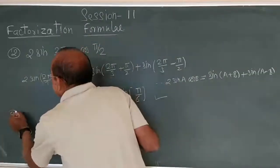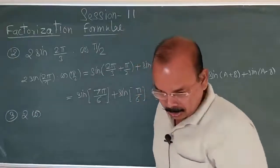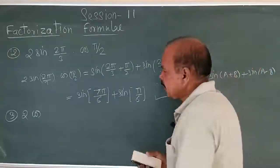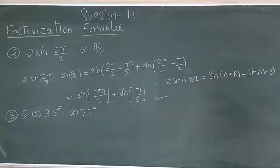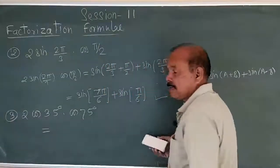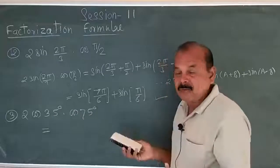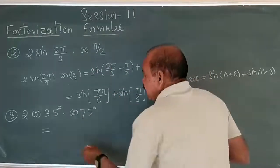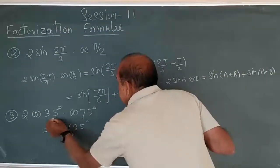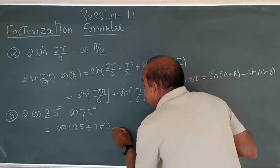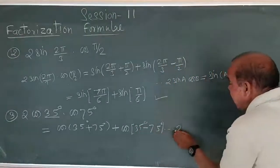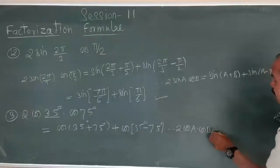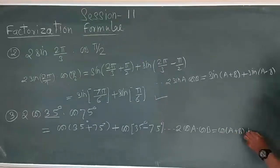One more problem: 2 times cos of 35 degrees into cos of 75 degrees. Here we have cos A and cos B — both cosines. The formula for cos cos: 2 times cos A cos B equals cos A plus B plus cos A minus B. So A is 35 degrees, A plus B is 75 degrees. Checking: 2 times cos A cos B equals cos A plus B plus cos A minus B.